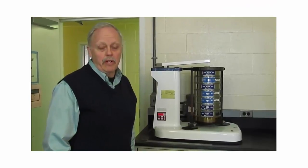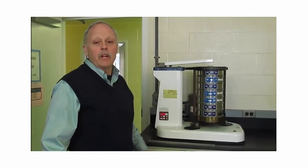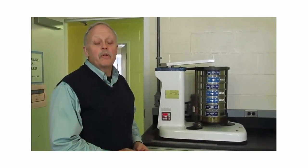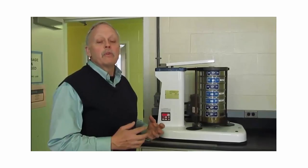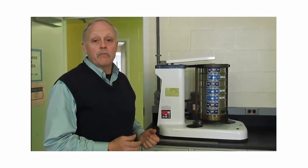This is a ROTAP separator. It's a very classical way of doing particle size on dry feed samples. It's a system that was originally used to develop the equations that we use for physical effective fiber evaluation of feeds and forages.